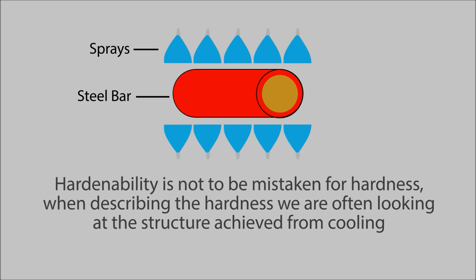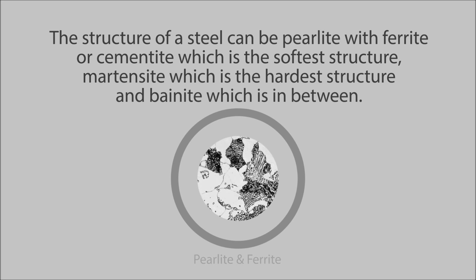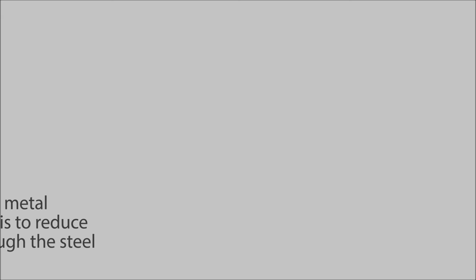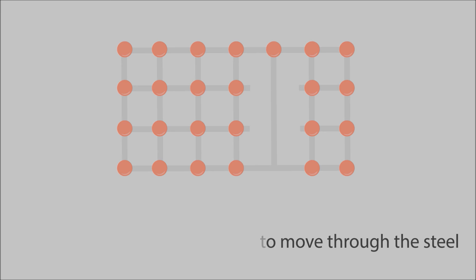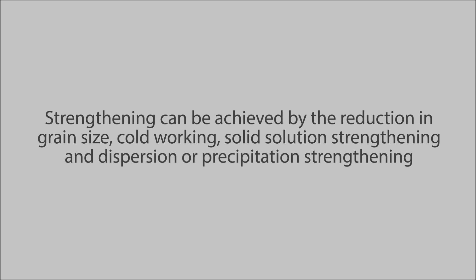When describing hardness, we are often looking at the structure achieved from cooling. The structure of a steel can be pearlite with ferrite or cementite (the softer structure), martensite (the harder structure), and bainite (which is in between). Dislocations reduce the strength of the metal. The principle of strengthening mechanisms is to reduce the ability of these dislocations to move through the steel. Strengthening can be achieved by reduction in grain size, cold working, solid solution strengthening, and dispersion or precipitation strengthening.